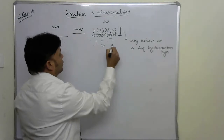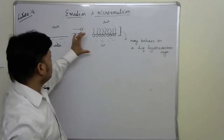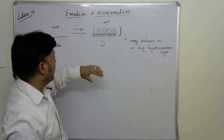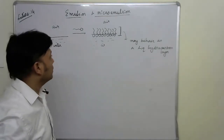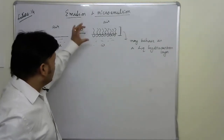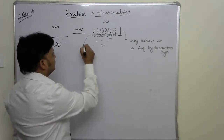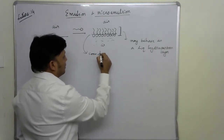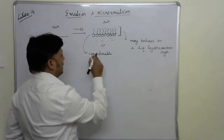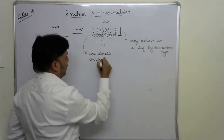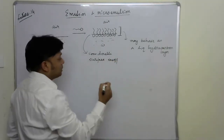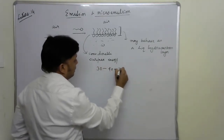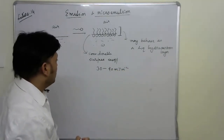As mentioned before, when surfactant molecules are present at the surface, they lower the surface tension of water by a significant extent. But this surface still has some considerable surface energy. Experiments reveal that this surface energy is in the range of 30 to 40 millijoules per meter squared, which is still quite high.